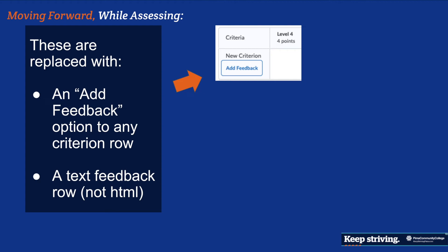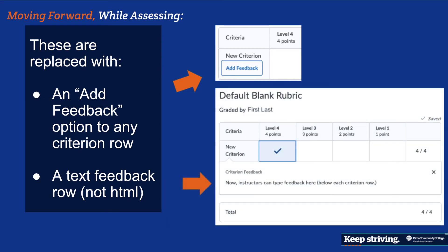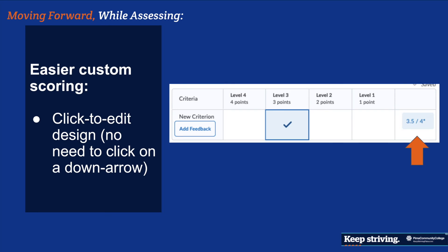These are replaced with something quite simple: an 'Add Feedback' button underneath every single criterion row that allows you to add text feedback — not HTML feedback, just plain text. You can see where you would type feedback to students. It is text only, clean, tidy, and easy to use.